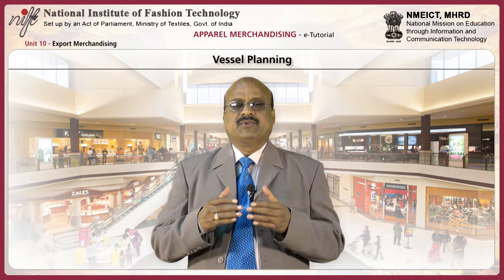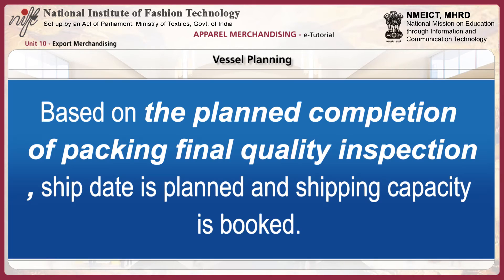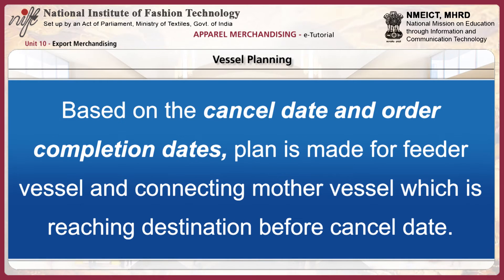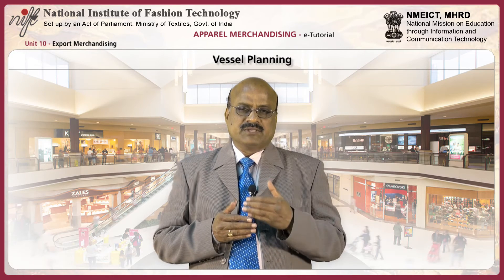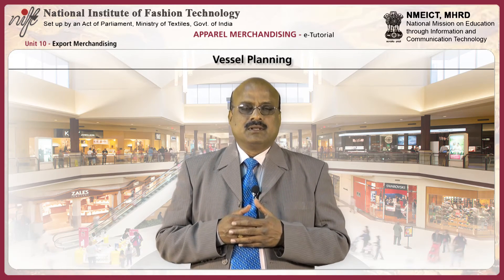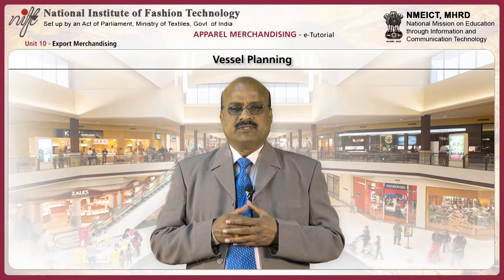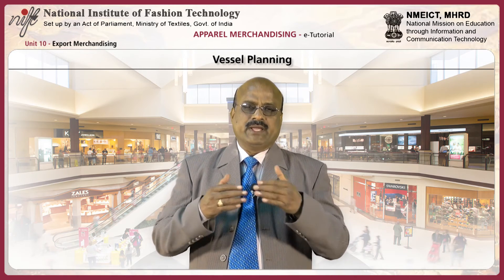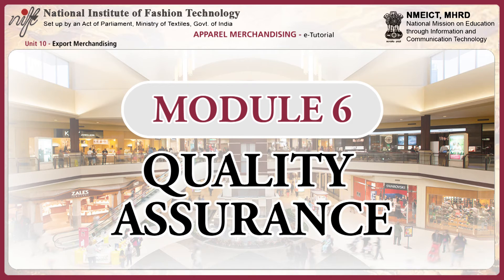Vessel planning involves planning for the shipping of goods. Based on the planned completion of packing and final quality inspection, the ship date is planned and shipping capacity is booked. Based on the cancel date and order completion dates, a plan is made for the feeder vessel and the connecting mother vessel to reach the destination before the cancel date. This vessel plan is done by the shipping department, and the export merchandiser coordinates with the shipping and documentation department.